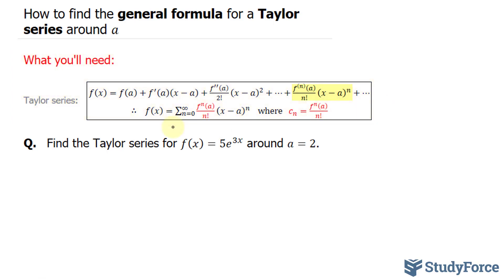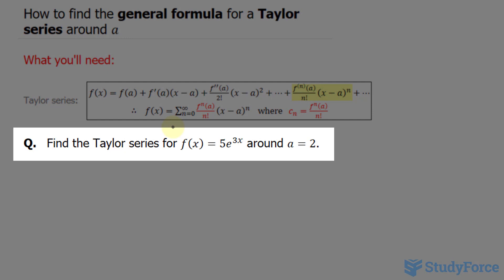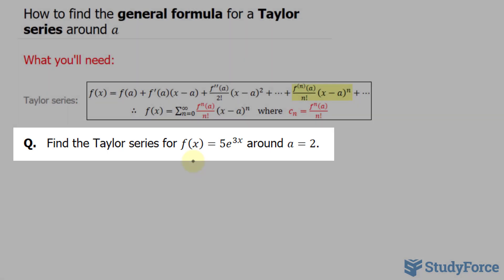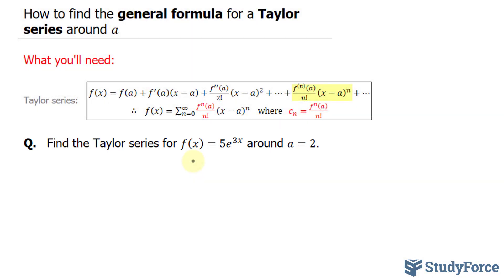What we're doing in this video is finding a Taylor series for the function f(x) = 5e^(3x) around a = 2. So the only thing that will be modified here is this part, and of course we'll be substituting 2 in for a.